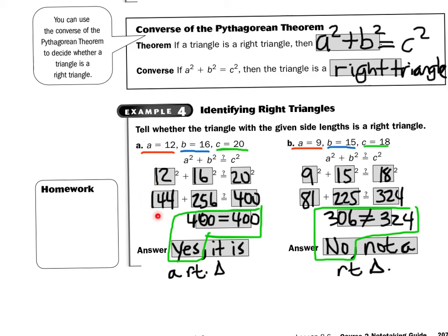12 to the second power is 144. Copy the plus. 16 to the second power is 256. Copy the equal sign. 20 to the second power is 400. And now we just add up 144 plus 256 and we get 400. So 400 matches 400. They're equal. So you'd say yes, it is a right triangle.